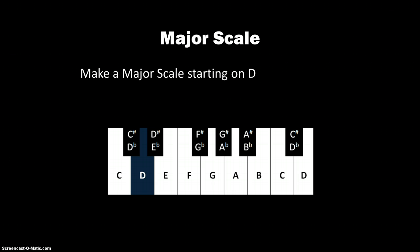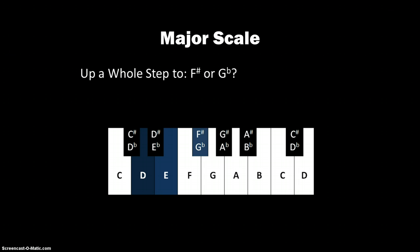We're going to move up a whole step to E, and we're going to move up another whole step. This involves one of the black keys. We've got two options there: we could either call that F sharp or G flat. Well, we don't want to skip the letter F, so we're going to call that F sharp.